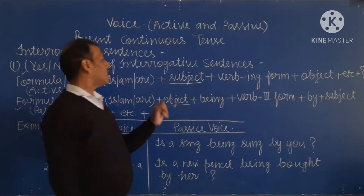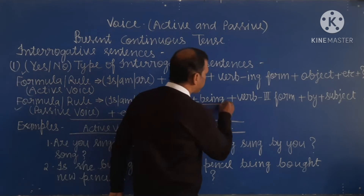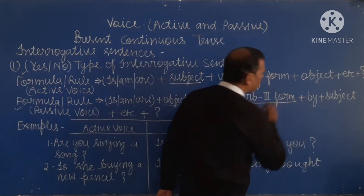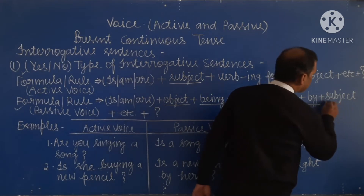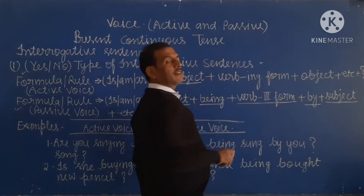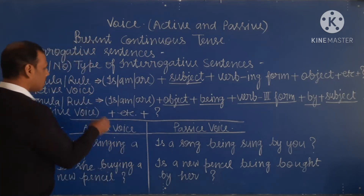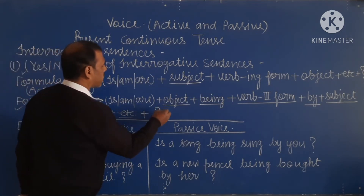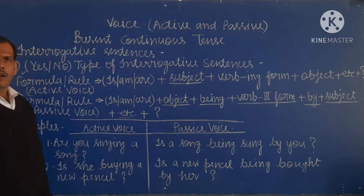After that, we write 'being', then the third form of the verb, then 'by', then the subject in objective case. Then etc., and at last a question mark. This completes the passive formula for the yes-no type of interrogative sentence.